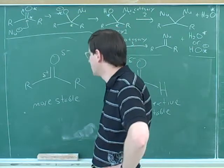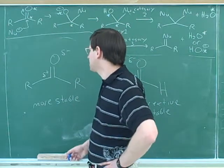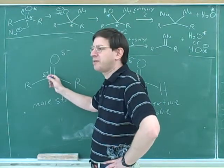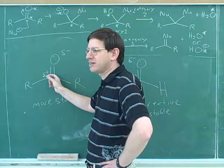Alkyl groups, carbon chains, are electron-donating. So these carbon chains here are stabilizing this delta positive, making it less unhappy and less reactive.